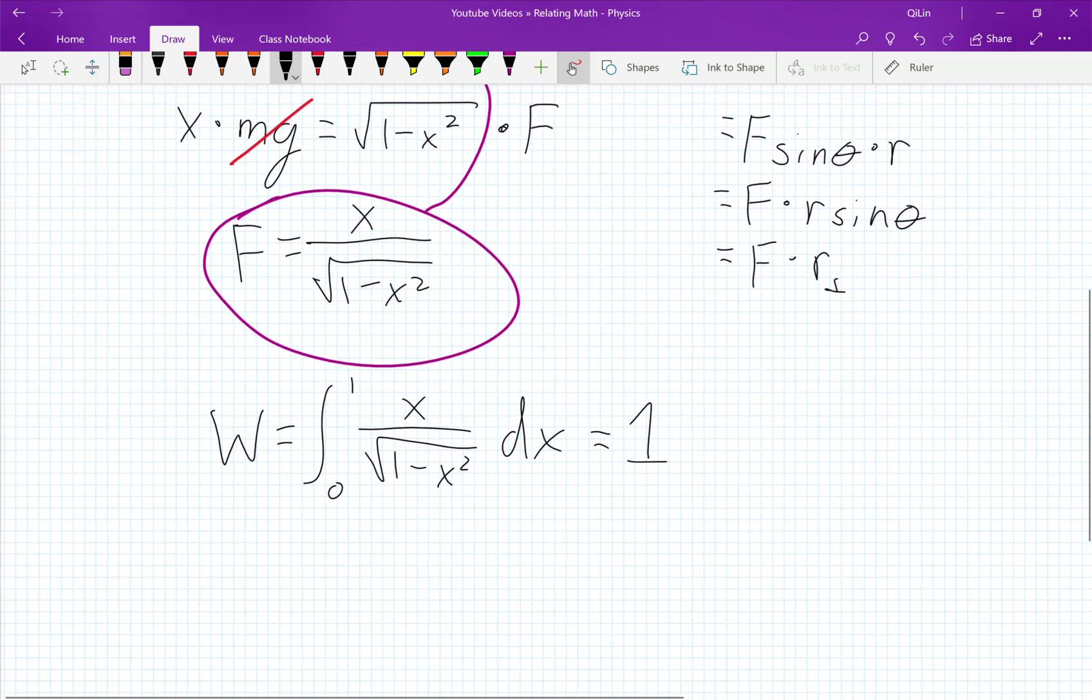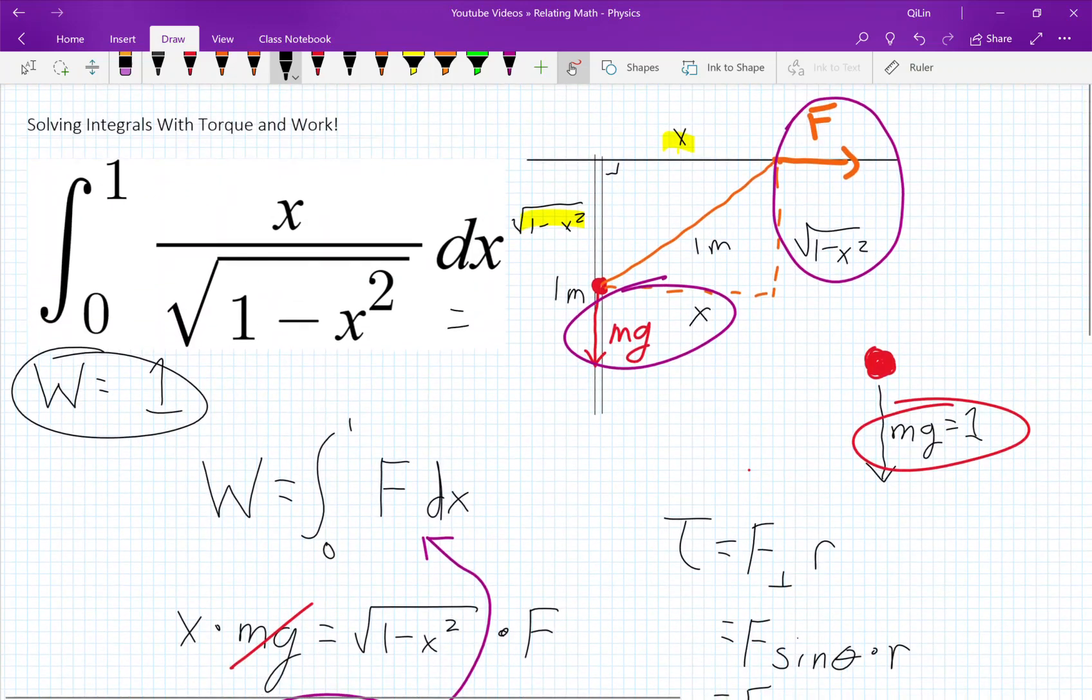And there we have it. The integral from 0 to 1 of x over the square root of 1 minus x squared dx is equal to 1. And that's the final answer. It's really simple, right?